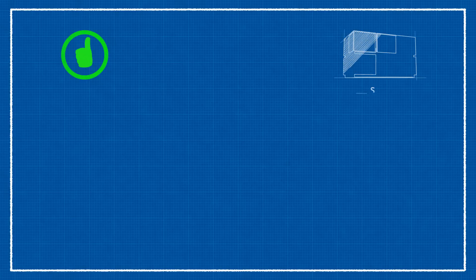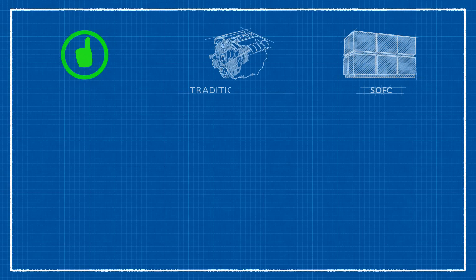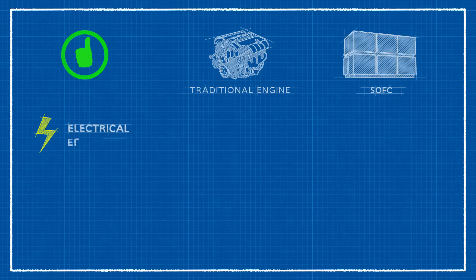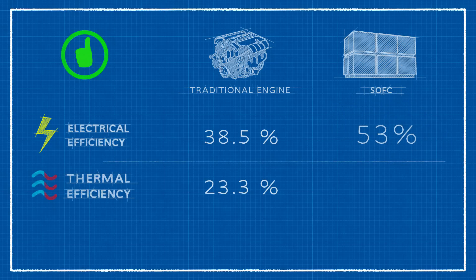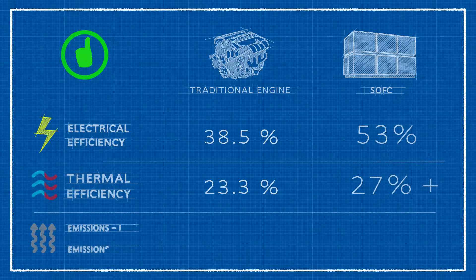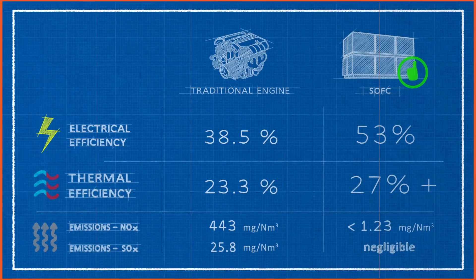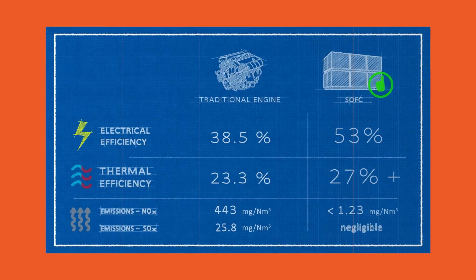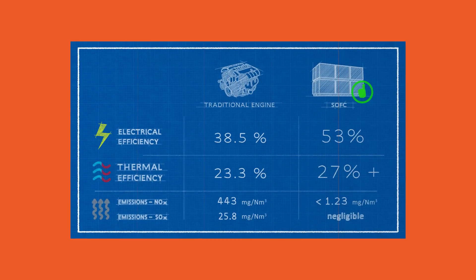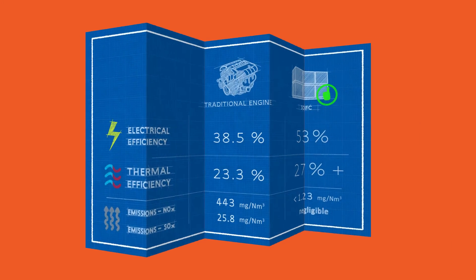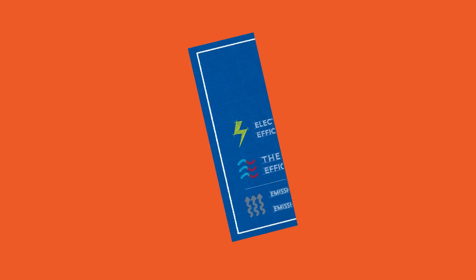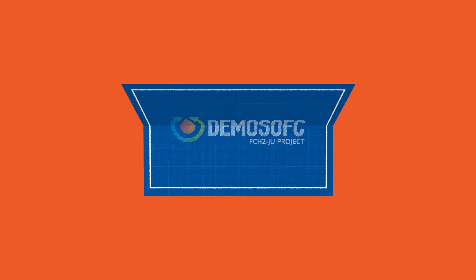Because of their distinctive electrochemical conversion, which avoids combustion, SOFC systems show zero emissions to atmosphere and high electrical efficiency, compared to average traditional internal combustion engines. All these features make DEMO SOFC the first and biggest industrial size solid oxide fuel cell project in Europe.